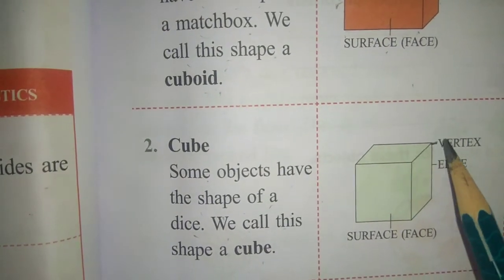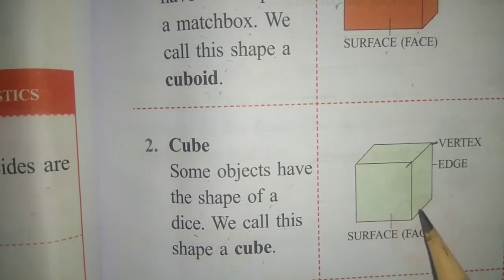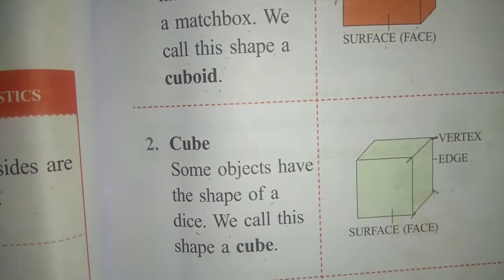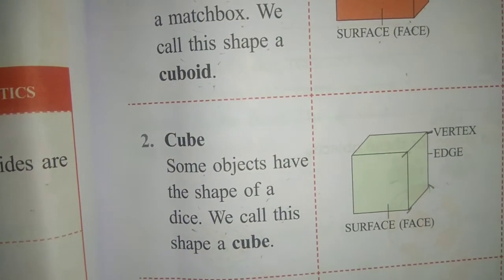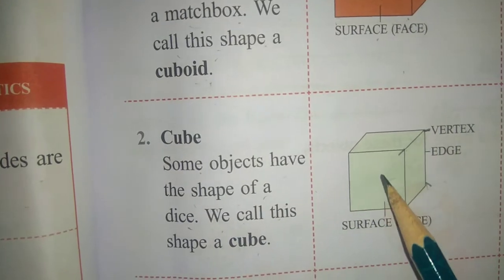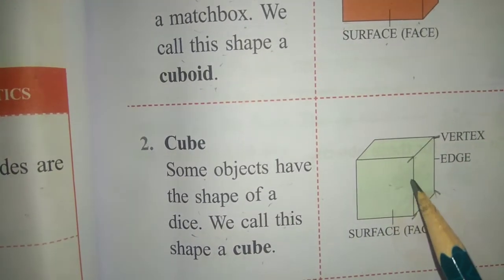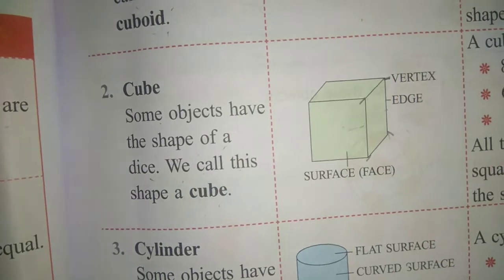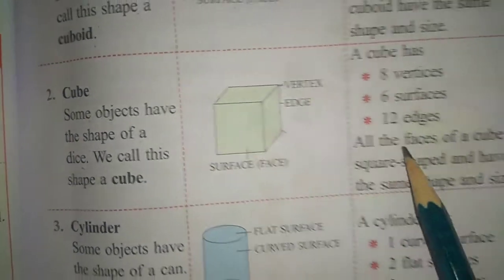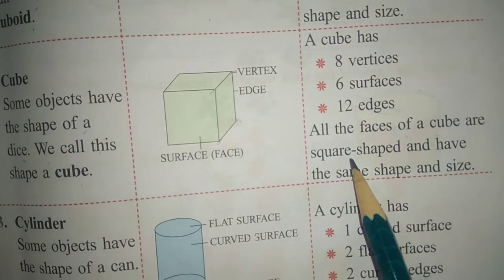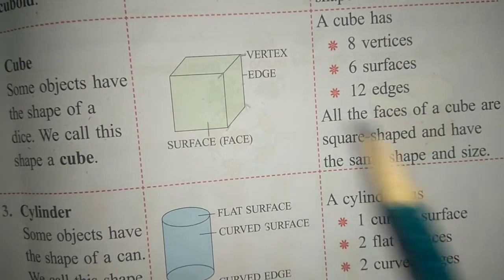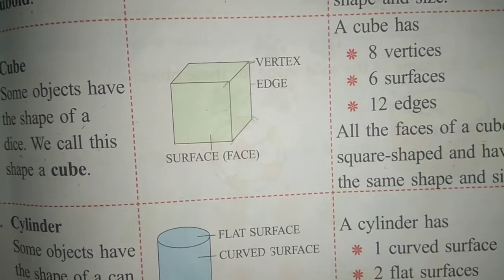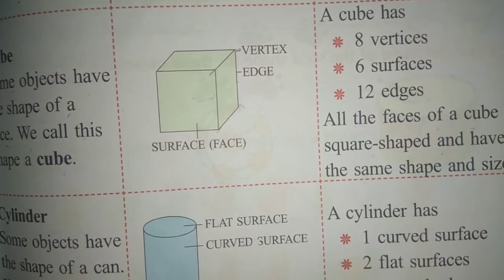In a cube: 8 vertices or corners, 6 surfaces or faces, and 12 edges. All the faces of a cube are squares and have the same shape and size.